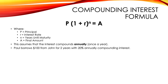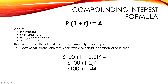Let's plug everything into the formula with our previous example: Paul borrows $100 from John for two years with a 20% annually compounding interest rate. We've got our principal, our 1, our interest rate of 0.2 — remember, we always write the interest rate as a decimal, not a percentage — and our exponent of 2, corresponding to the number of years. We do 1 plus 0.2, which is 1.2. Squaring that gives us 1.44. Then 100 times 1.44 gives us $144 — the same answer we got before. That's how you use the compounding interest formula.